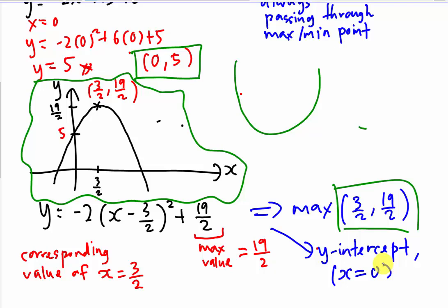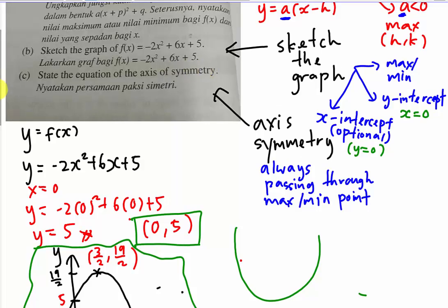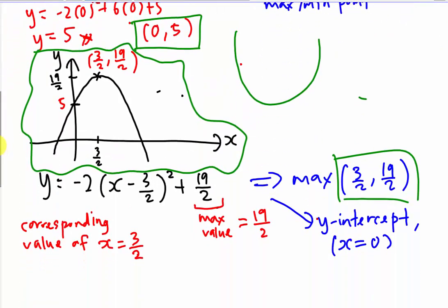Last but not least, part c asks you to find the axis of symmetry. The axis of symmetry always passes through the maximum or minimum point. So from our completed square, the axis of symmetry is x equals 3 over 2.